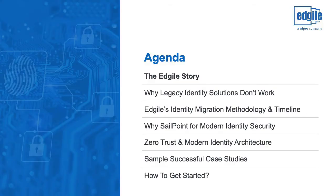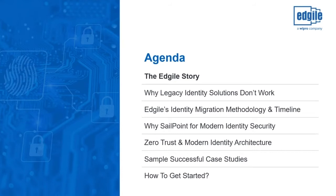For today's agenda, we'll go through a bit of background on who Agile is and what we do. We'll cover why legacy solutions don't work, especially around legacy authentication and our identity migration methodology and timeline. Then Mike will present on why SailPoint for modern identity security. Next we'll discuss why zero trust matters, and finally we'll walk through a couple of case studies and how to get started.